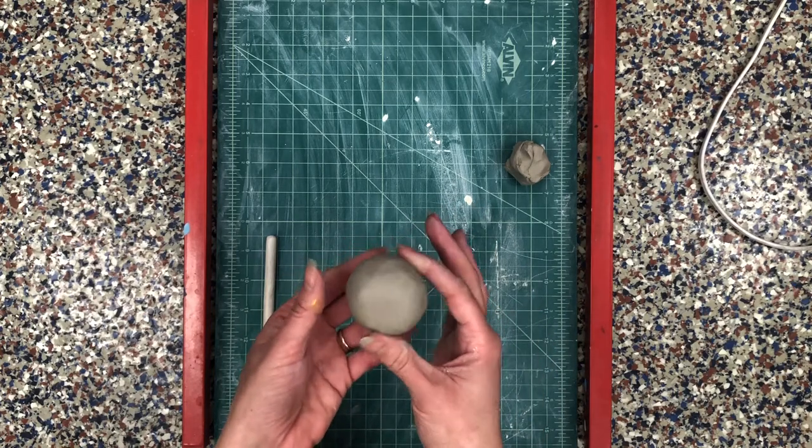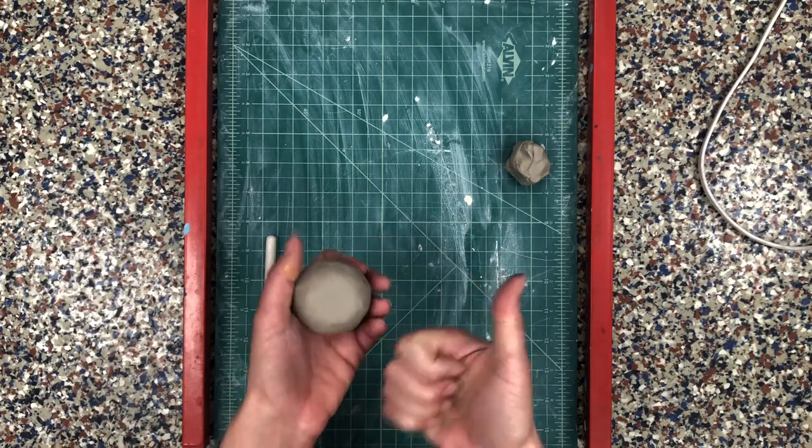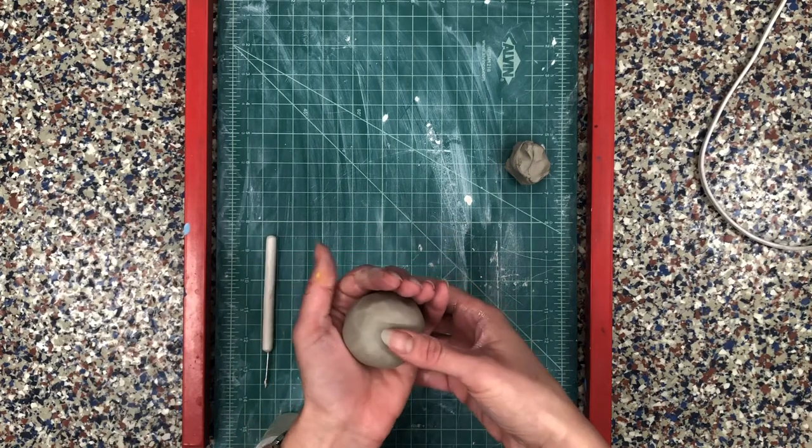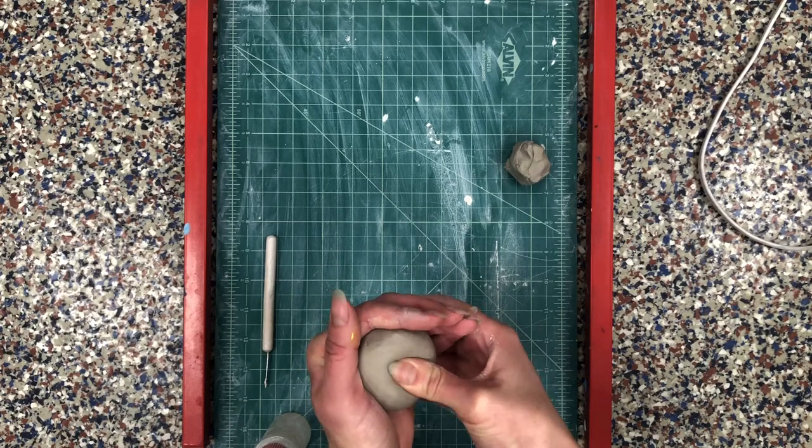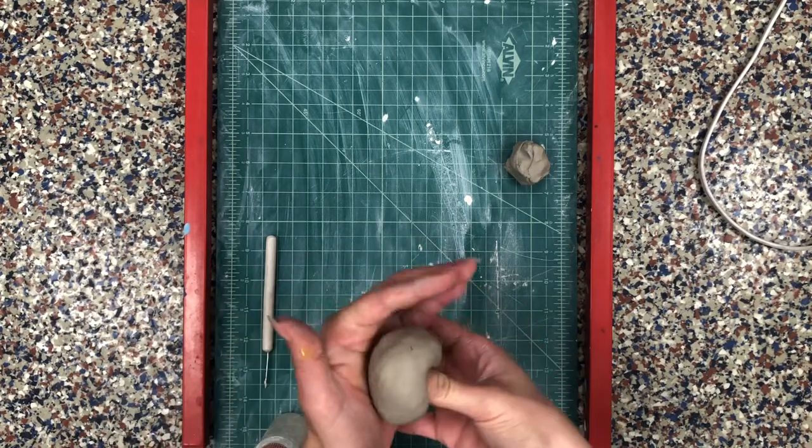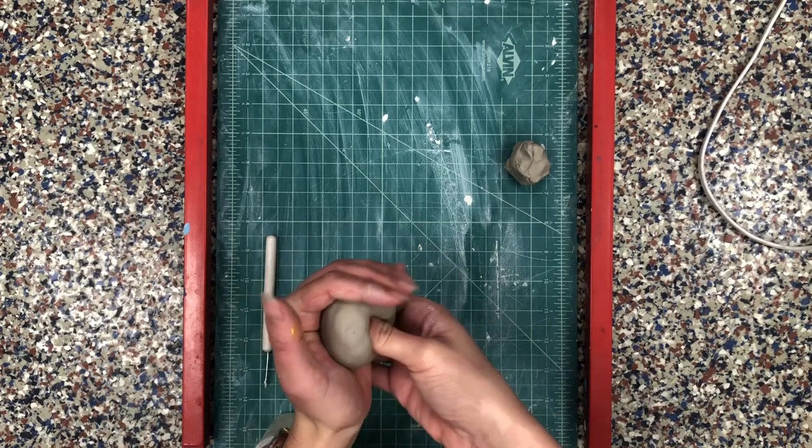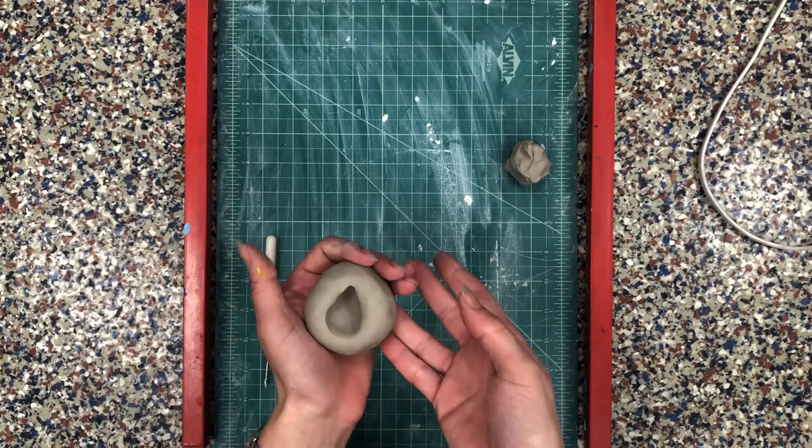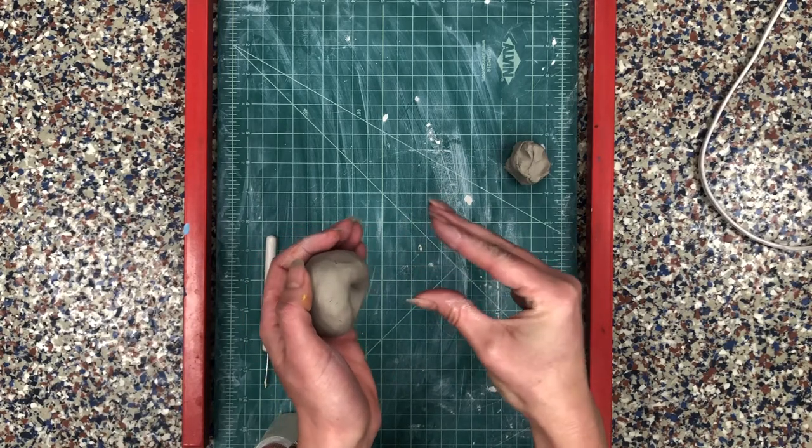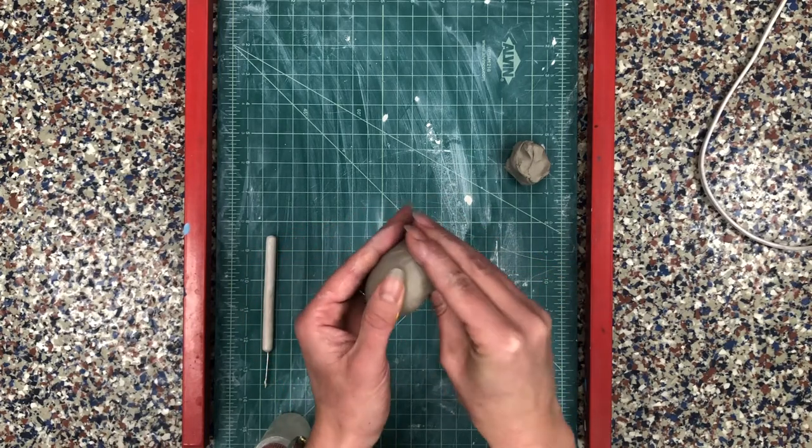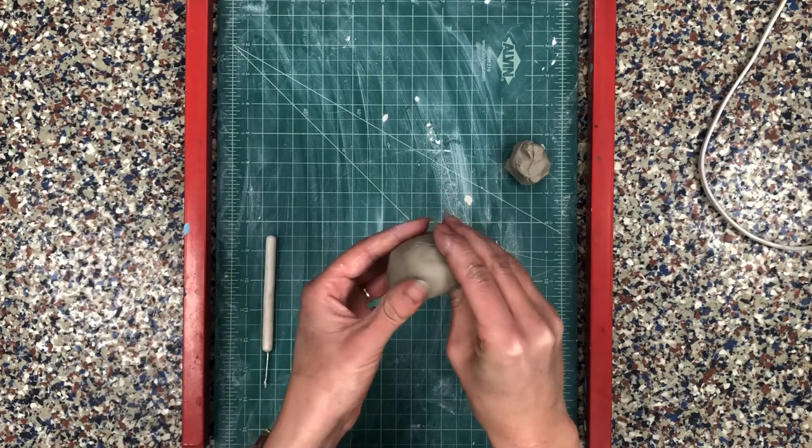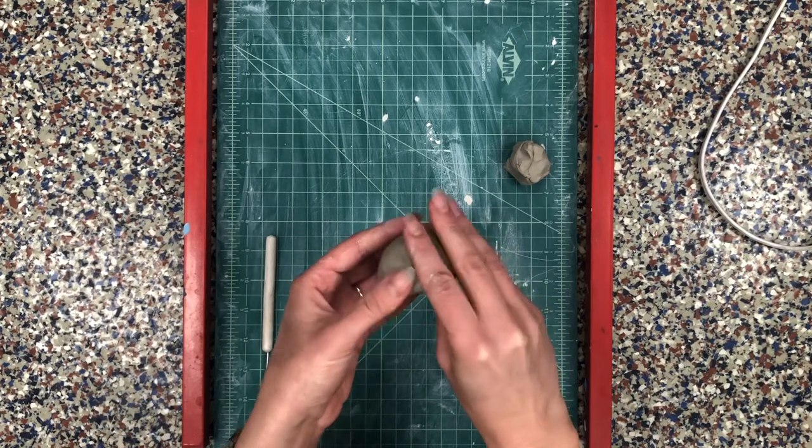So the next step of making our pinch pot is we're going to put our thumb into the ball. So I'm just gonna hold the ball in one hand and use my strong thumb to push about halfway through. You don't want to push all the way through to the other side obviously. Now once your thumb has made that little hole, I'm going to get my pinching finger and thumb and I'm going to start pinching around the edge of my pinch pot just very gently.